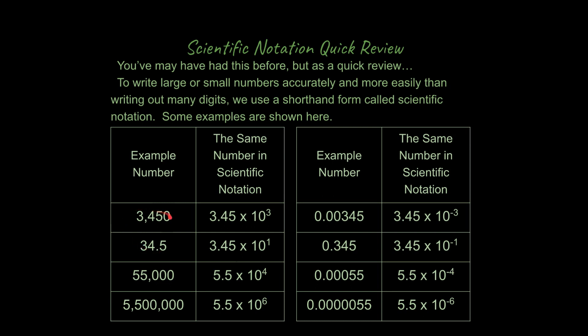If you take a look at this example, so I set these up so you can compare and contrast these. 34.5, to put this in scientific notation, we just want to move this decimal place over by one. And if we do that, it's like saying 3.45 times 10 to the one power will be this number in scientific notation. And take a look at these examples down here.